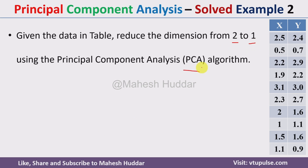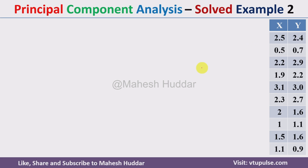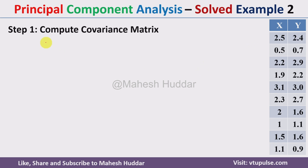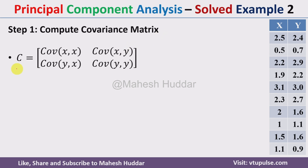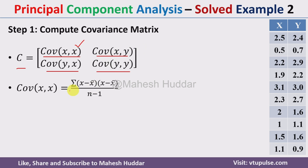We will now discuss the different steps in Principal Component Analysis. The first step is to compute the covariance matrix. The covariance matrix C is equal to: covariance of (x,x), covariance of (x,y), covariance of (y,x), and covariance of (y,y). Since there are two dimensions, we will get a 2×2 covariance matrix.